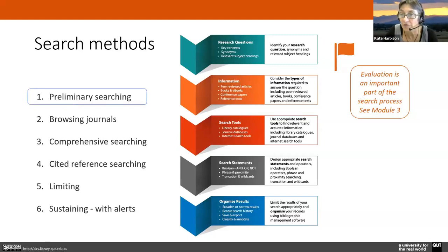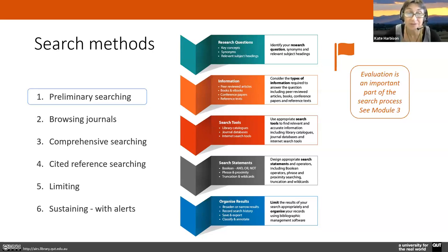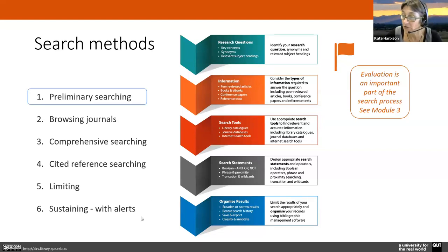It's also to make sure you don't go off onto weird tangents. I find that whatever I find, I go down rabbit holes of information all the time. And that's why you can use your research question to keep yourself on track. A well organised process will help you identify the research question, consider the types of information required to answer your question, use appropriate tools, design appropriate search statements so that you get all of the material that you want without too much extra stuff, and limit and organise the results so that you can get exactly what you want.